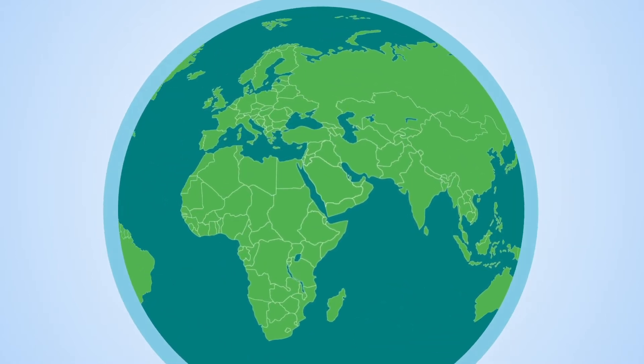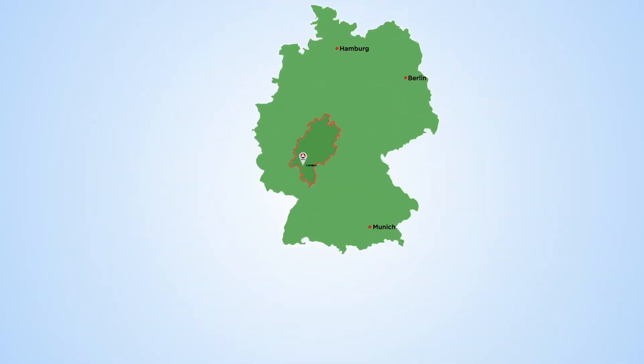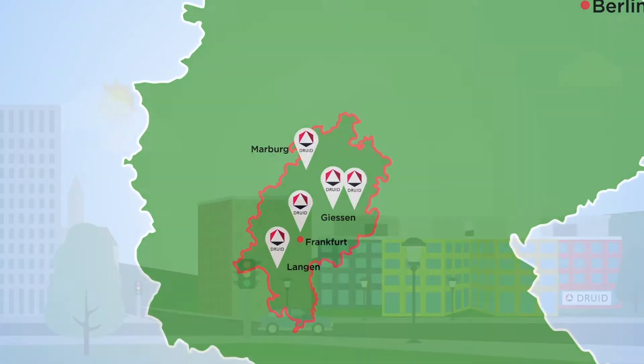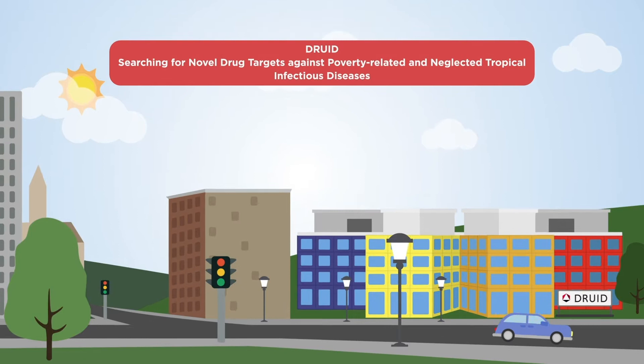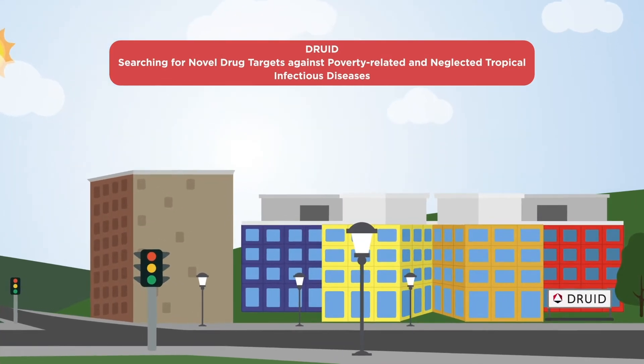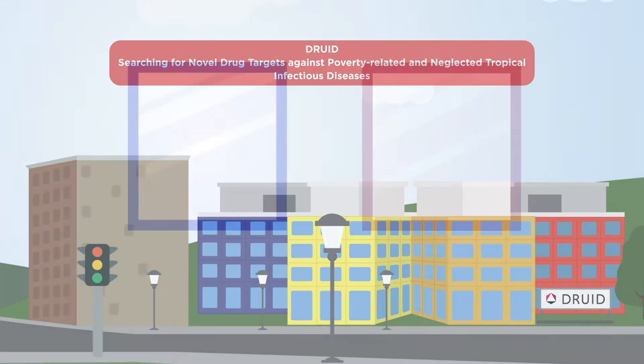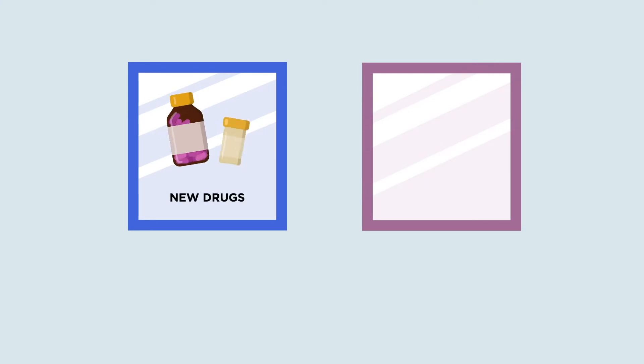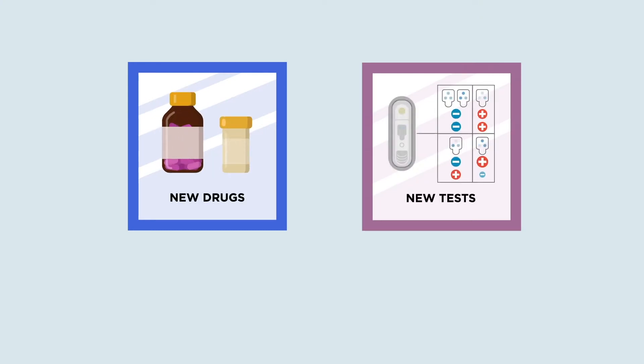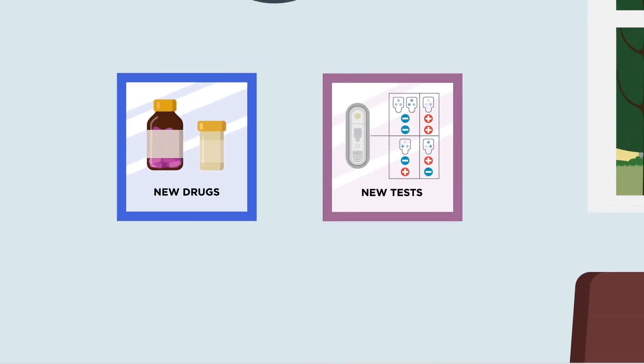Druid is a unique research consortium in the heart of Germany and aims to combat neglected tropical diseases like dengue fever, schistosomiasis, or Zika. The researchers of Druid have two key goals: the development of new drug candidates and diagnostic tests for neglected and poverty-related tropical diseases.